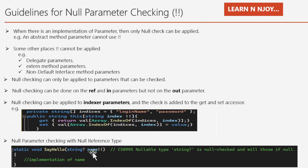That brings me to the end of my session. To sum up: in this video we saw null parameter checking in a new concise way in C# 11. We also saw how null parameter checking was done in previous versions of C#. Finally, we discussed the rules and guidelines to follow when using the double exclamation mark as null parameter checking in C# 11.